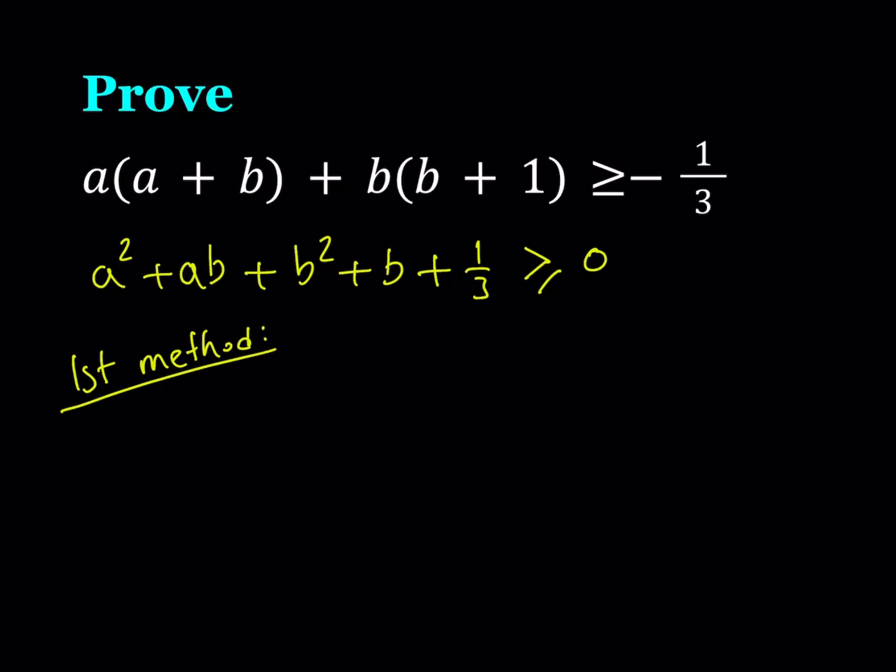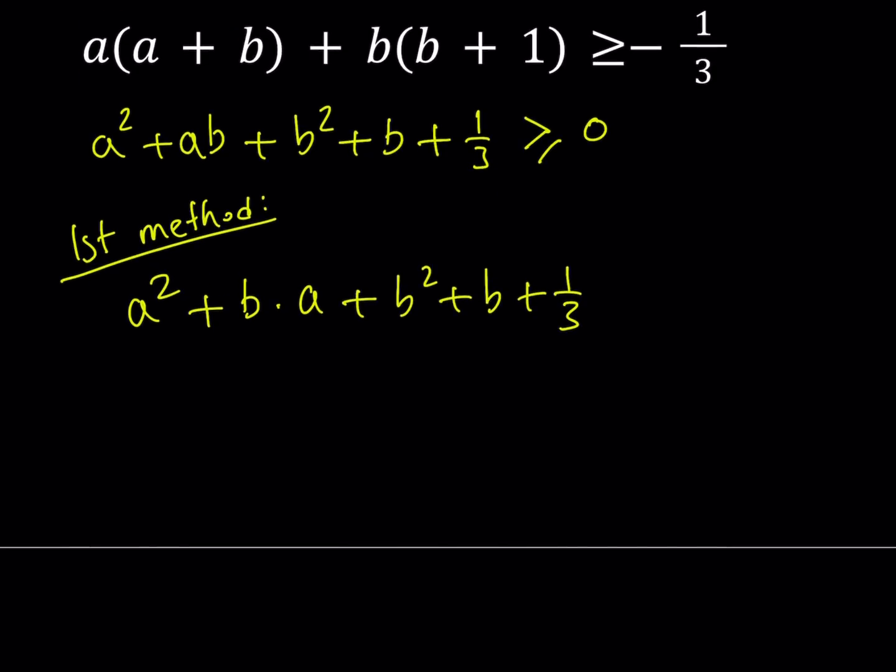So my first method basically involves treating this as, the left hand side I mean, as a quadratic equation in a. So let's go ahead and write it that way. So I have something like a squared plus b times a plus b squared plus b plus one third. So if I treat this as a quadratic equation or quadratic function,